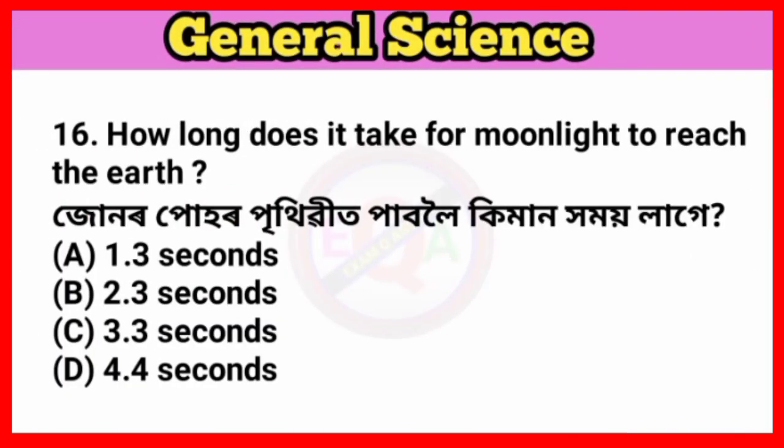Question number sixteen: How long does it take for moonlight to reach the earth? Answer option A: 1.3 seconds. Sunlight takes 8 minutes 20 seconds to reach the earth.